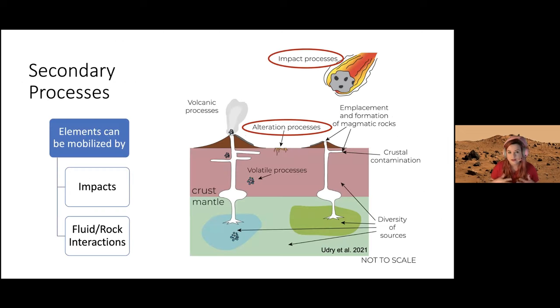But sometimes these signatures can get altered by impact processes, as we saw in the last presentation, or other alteration processes like fluid-rock interactions. We know that liquid water flowed on the surface of Mars, so that can also alter things. A majority of these Martian meteorites fall to Earth and don't get discovered for a while, so they undergo alteration on Earth's surface. Now you have a very convoluted history of these secondary processes.